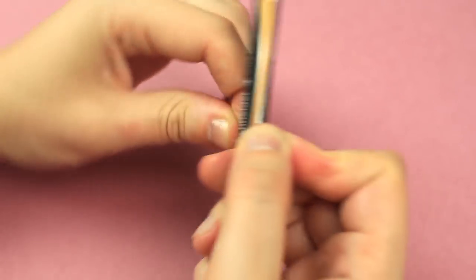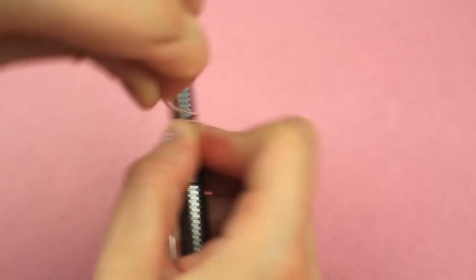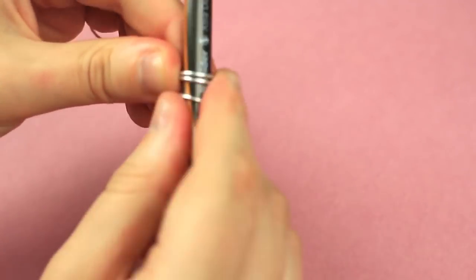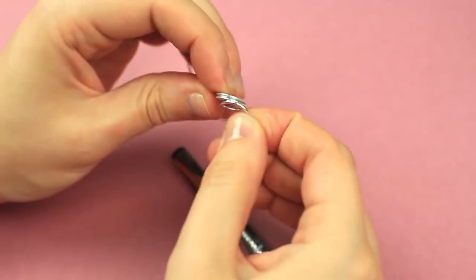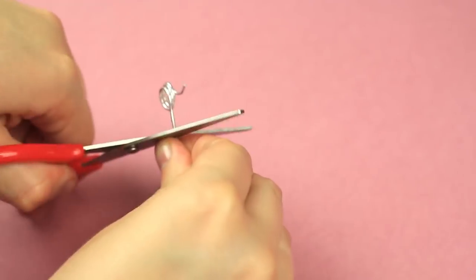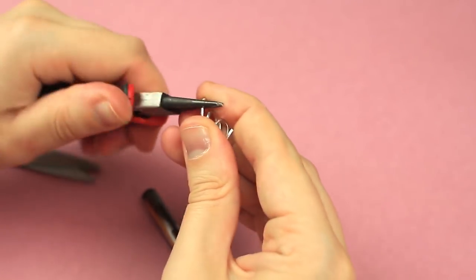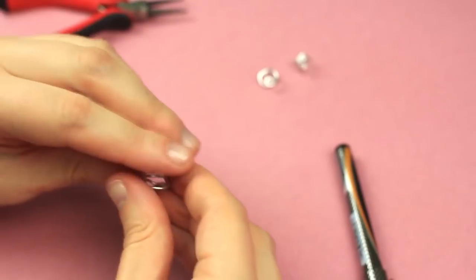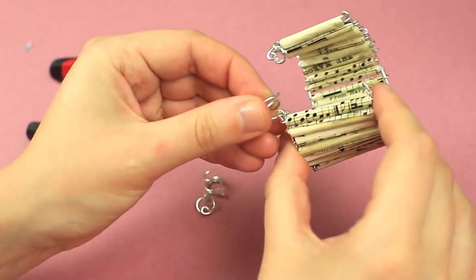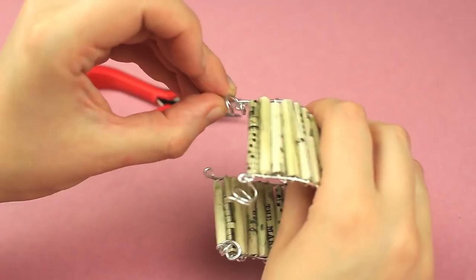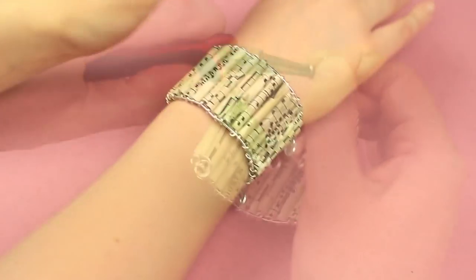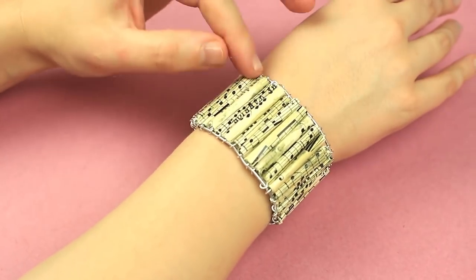Let's embellish the bracelet with wire curls. Wind the wire around a pen or a pencil. Cut off the excess. Make a loop with a tool. Make 3 more such curls. Put the details on the bracelet. The musical note paper bead bracelet will match you perfectly.